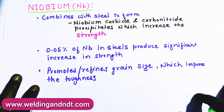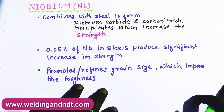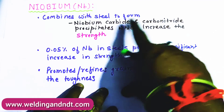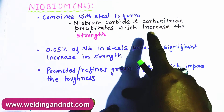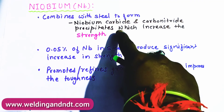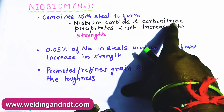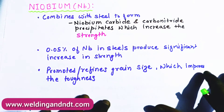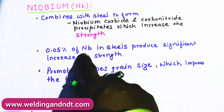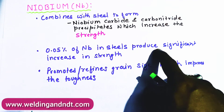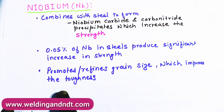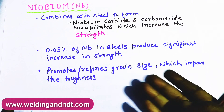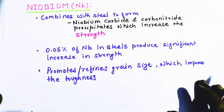Niobium combines with steel to form niobium carbide and carbon nitride precipitates. This helps in increasing the strength of steel. Even 0.05 percent of niobium produces a significant increase in strength. One more importance of niobium is that it refines the grain size, and if you refine the grain size, the toughness is improved.